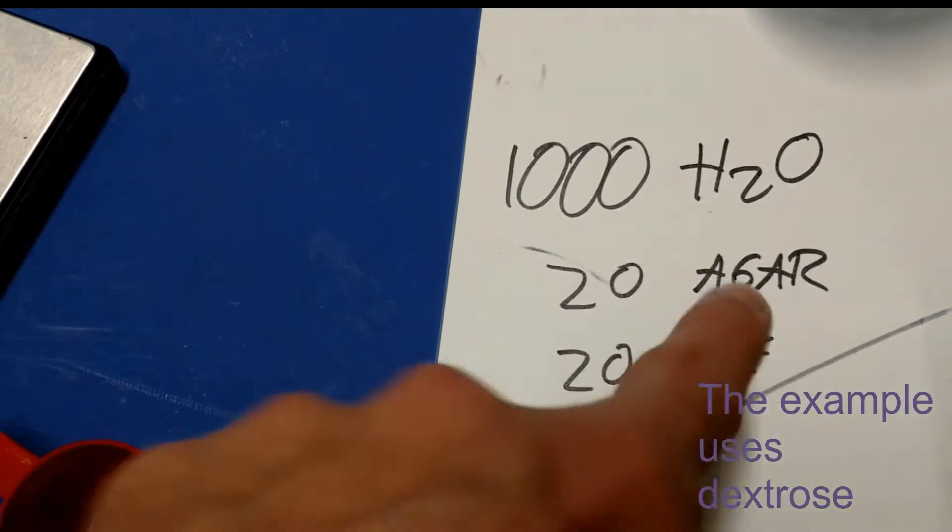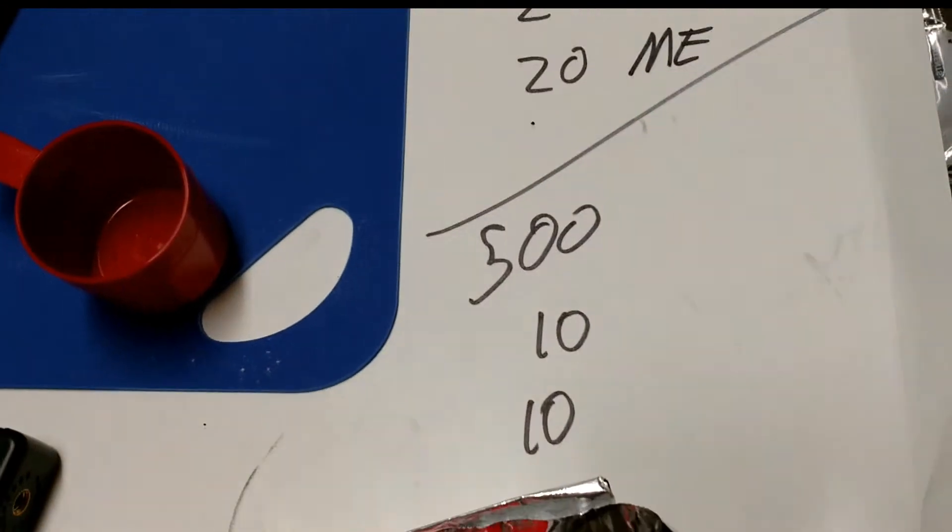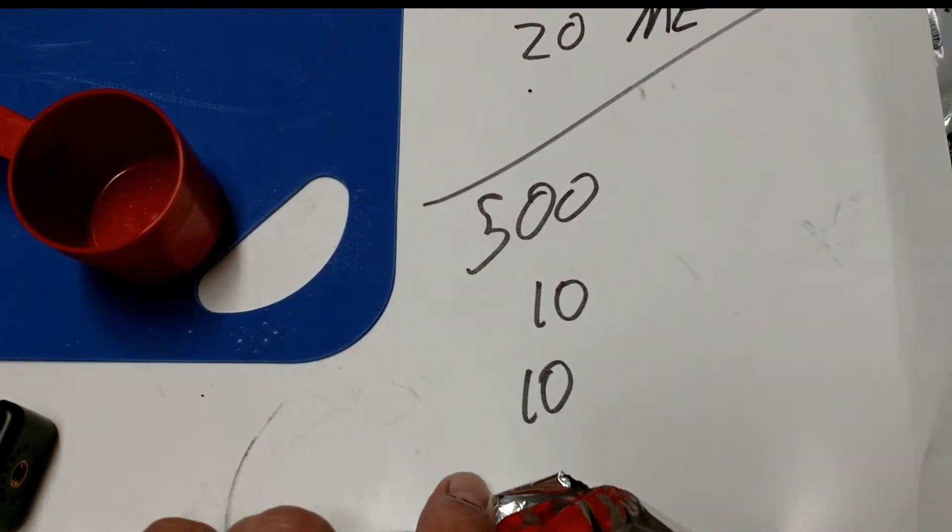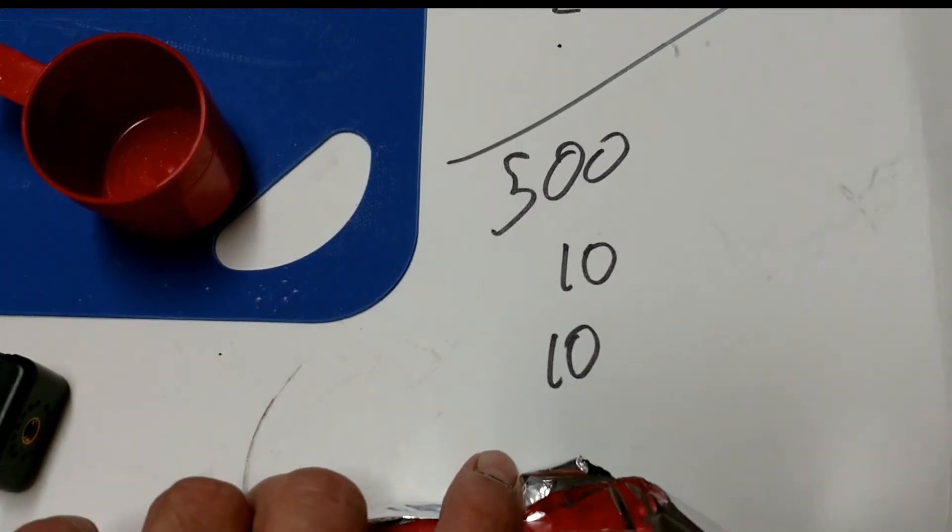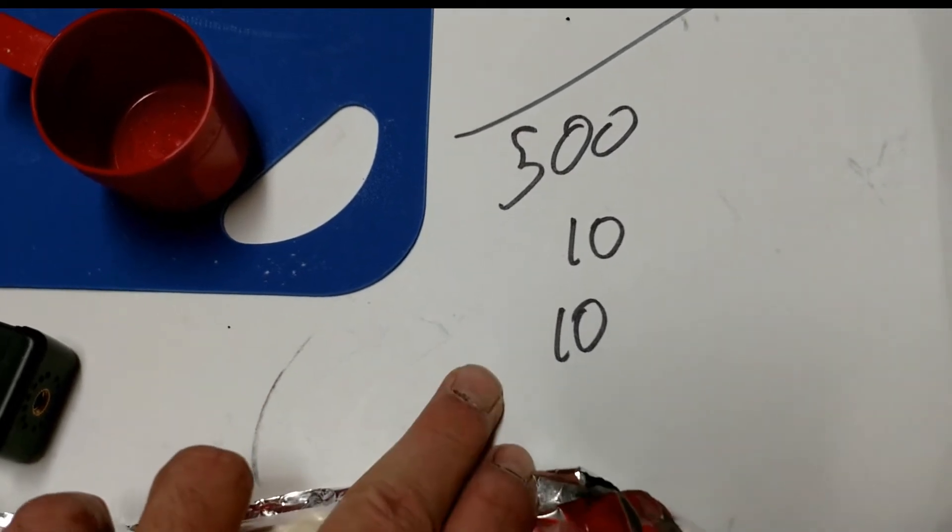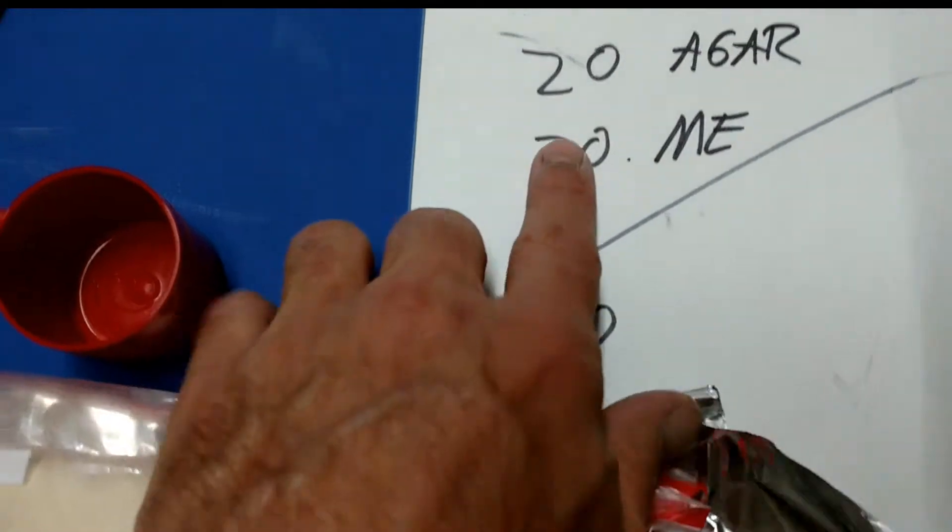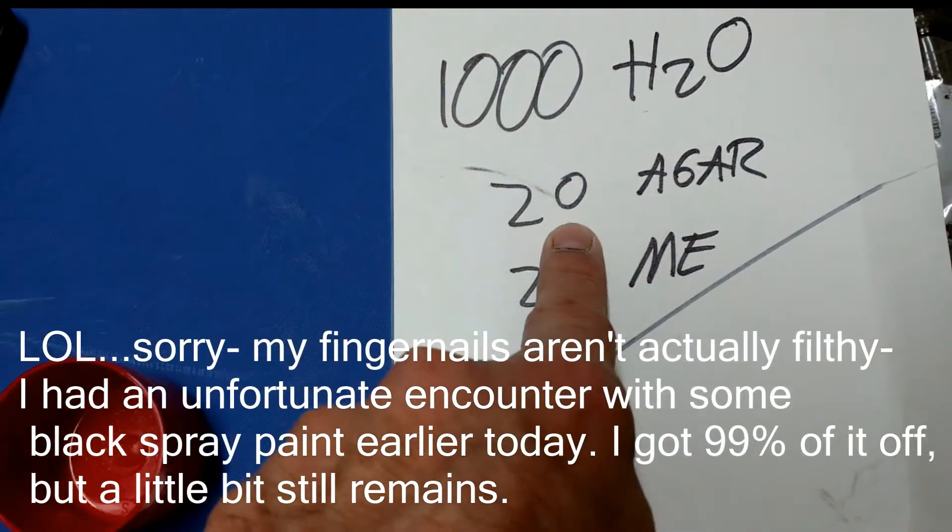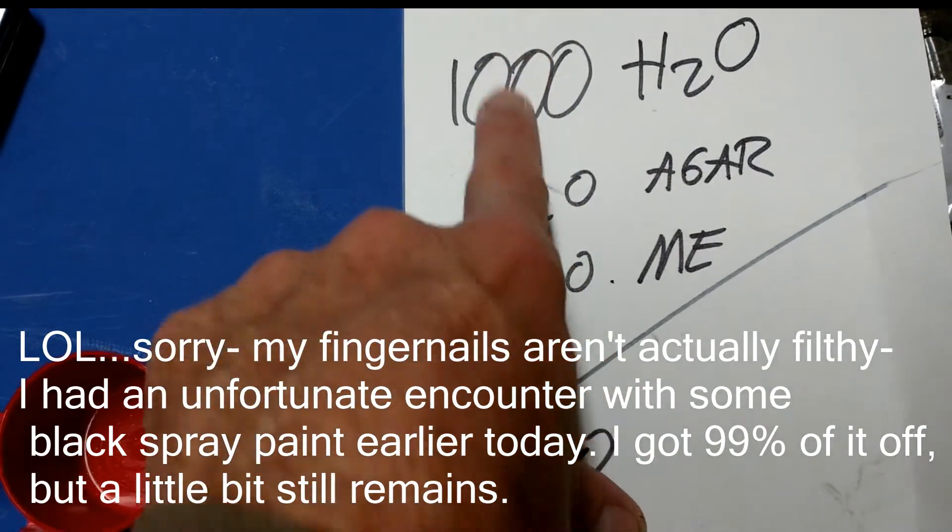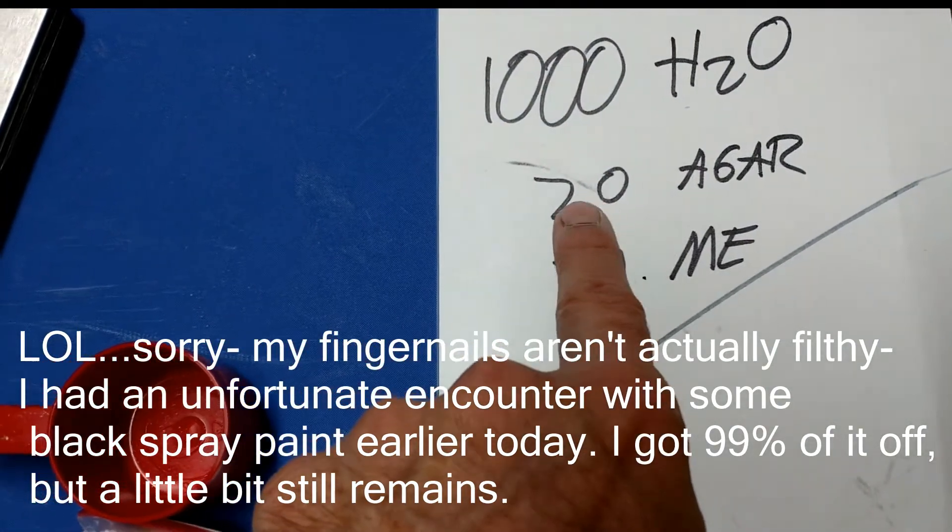For a half batch, the ratio is the same: 500 milliliters of water, 10 grams of agar, and 10 grams of nutrients. The amount of agar per water determines how thick it is. This is an economical ratio that gives you a very usable platform.